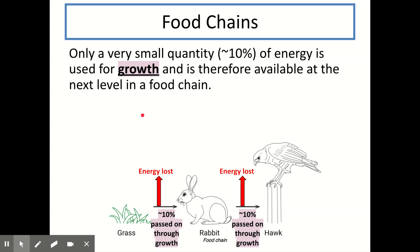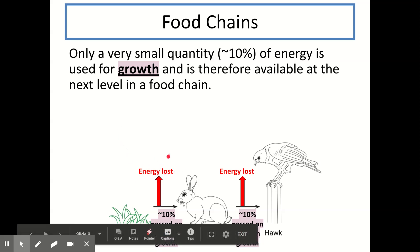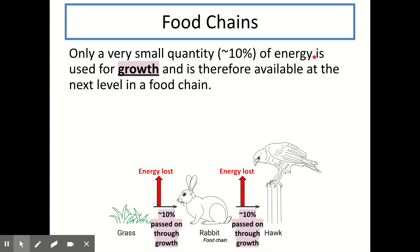Only a very small quantity of the energy — about 10% — is used for growth and is therefore available at the next stage in the food chain. So 90% is lost through heat, movement, and undigested material, and the other 10% is used for growth and is passed on to the next stage. A really common question asks in what way energy is passed on, and the answer is through growth.